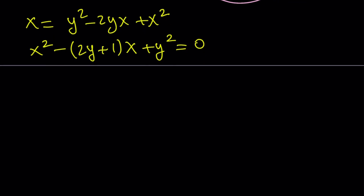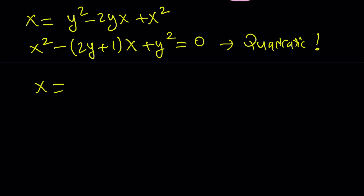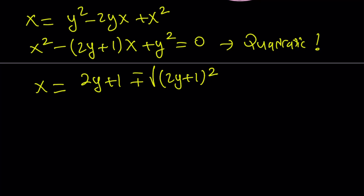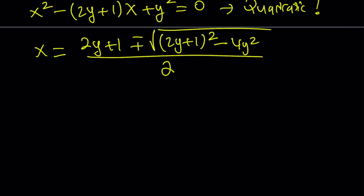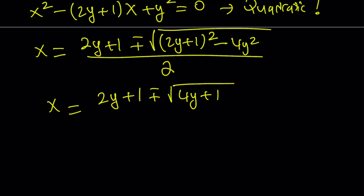To solve for x, I'm going to use the quadratic formula, which gives us two solutions. By the quadratic formula, x = [−b ± √(b² − 4ac)] / 2a, where b = −(2y+1), giving (2y+1) ± √((2y+1)² − 4y²), all divided by 2. If you subtract 4y² inside, the 4y² cancels out, and you end up with (2y + 1 ± √(4y + 1)) / 2.